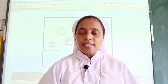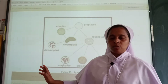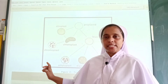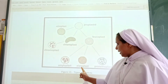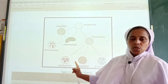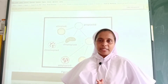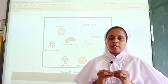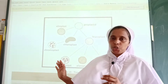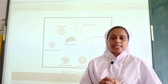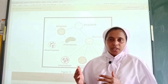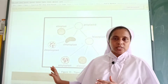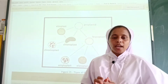Now let us see the classification of plastids. As mentioned, leucoplast is divided into amyloplast, elaioplast, and proteinoplast. Amyloplast is found in tubers, cotyledons, and endosperms of plants. What does amyloplast store? It stores starch.